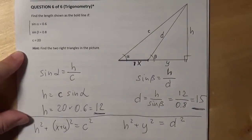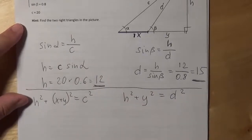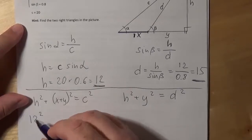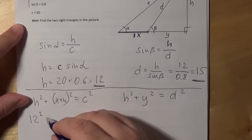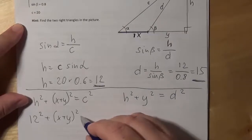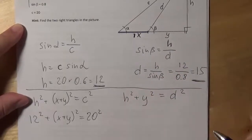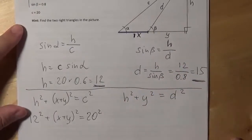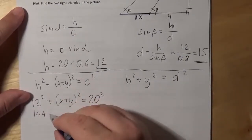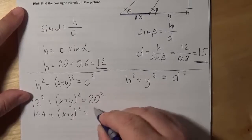Now, let's use the numerical values as far as we have them. H is 12, so it's 12 squared, plus, we don't know, X plus Y squared, equals C squared, it's 20, 20 squared. Okay, going one step further, we get 144 plus X plus Y squared equals 400.